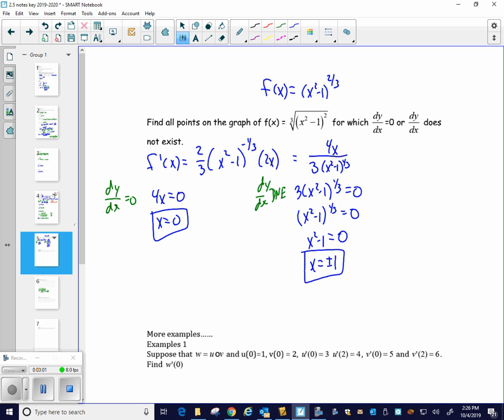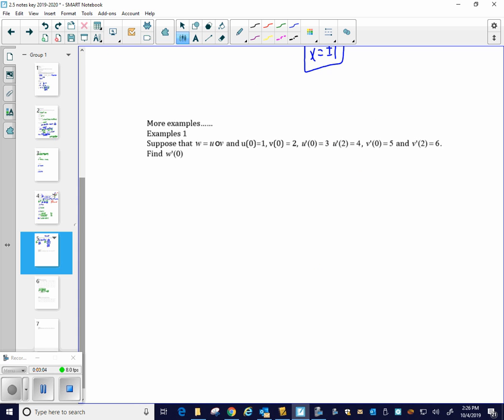All right. Small application of the chain rule there. Okay. Notationally, this example here, suppose that w is u of v. That looks like a times. It's supposed to be u of v. I cannot draw a little open circle. There we go. u of v. Which is the same thing as u of v of x, kind of a thing. All right. They give us a whole bunch of different values, but they did not actually give us u and v.